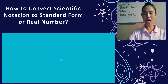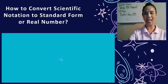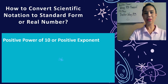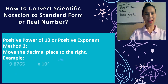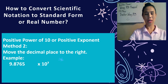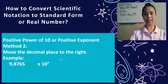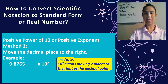Let's now move on to the second method on how to convert scientific notation to standard form or real number. We are still dealing with the positive power of 10 or positive exponent. The rule is move the decimal place to the right. An example is 9.8765 times 10 to the seventh power — remember that we are moving the decimal point seven places to the right because the exponent says so.